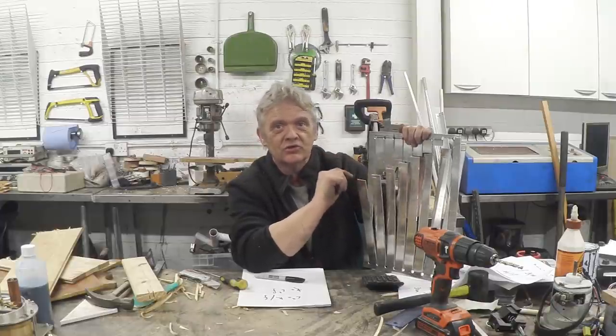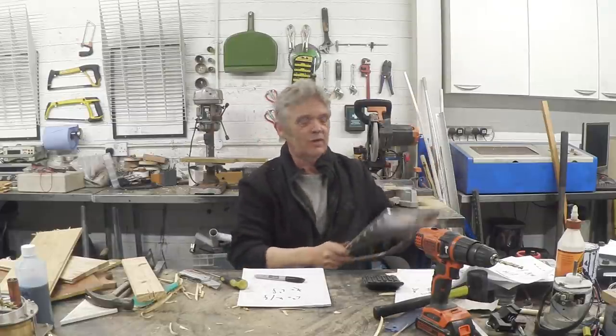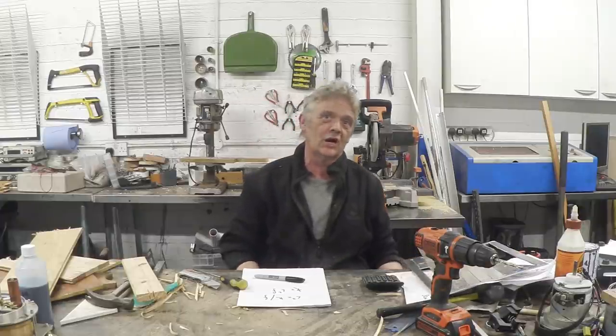So just cut them a little bit bigger and then file them down when you want to get it spot on using a frequency recorder on your computer. But doing that you can now make glockenspiels, xylophones, tongue harps, wind chimes, all kinds of stuff, tubular bells even, that will be in tune.